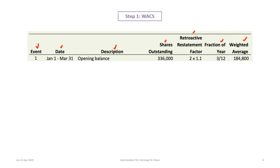The first entry is really just the opening balance. Nothing happened from January 1st to March 31st; the first event happens on April 1st. So we have a period where 336,000 shares are outstanding. Because there is a two-for-one stock split and a 10% stock dividend later, we multiply the shares by 2 times 1.1 for the retroactive restatement factor, then multiply by 3 over 12 for the fraction of the year. This gives us 184,800 weighted average shares.